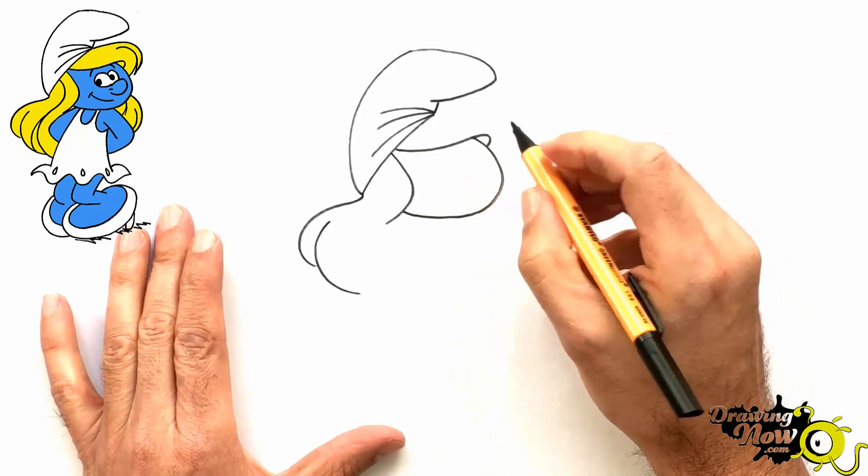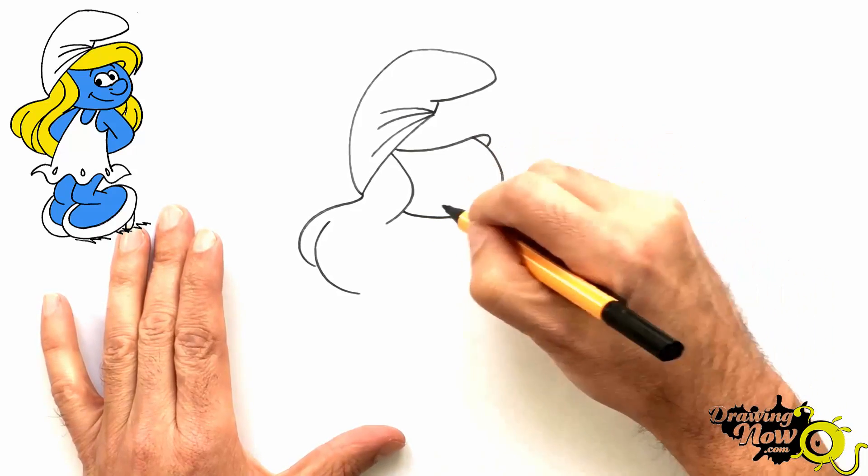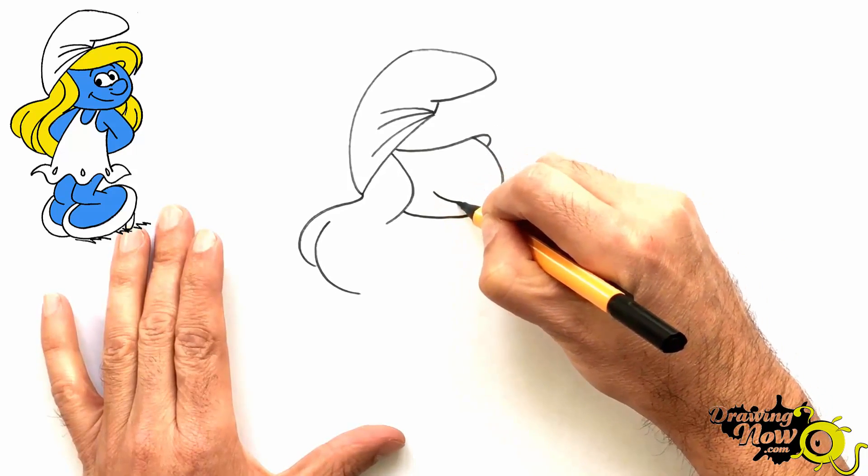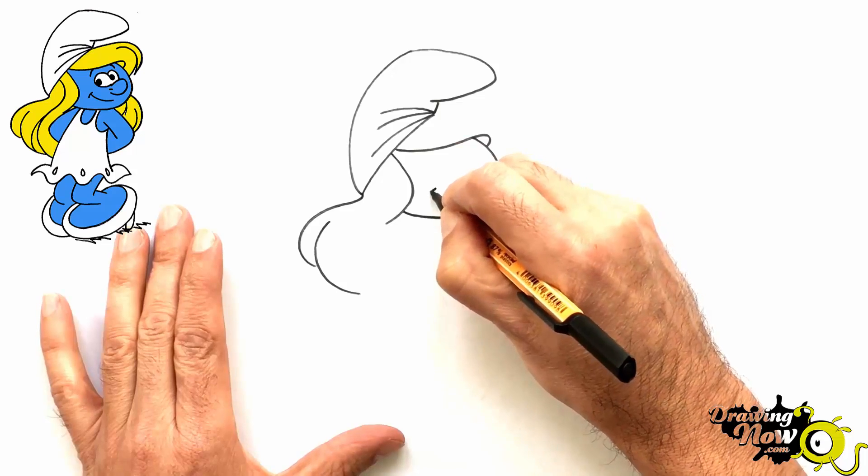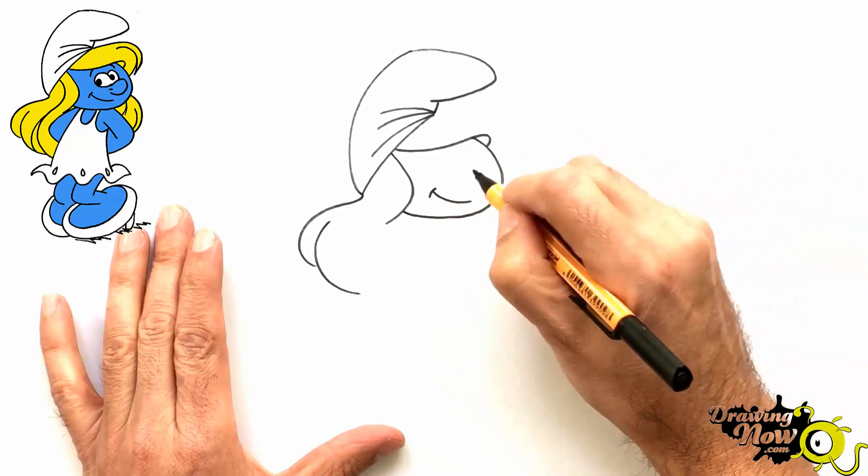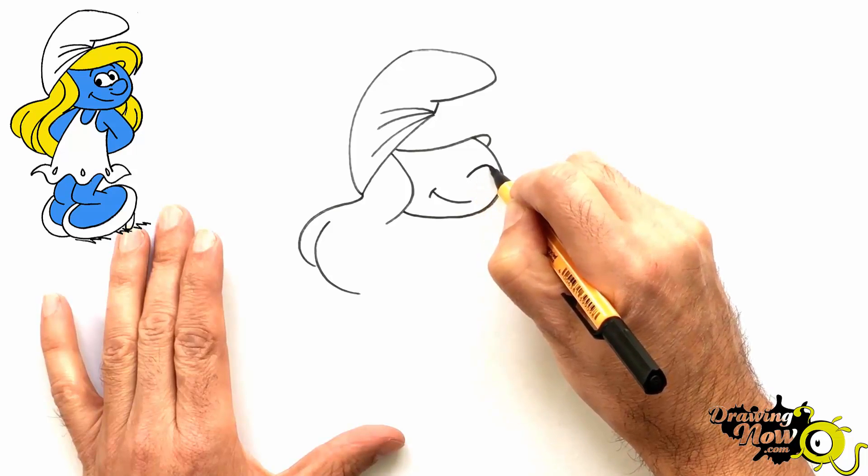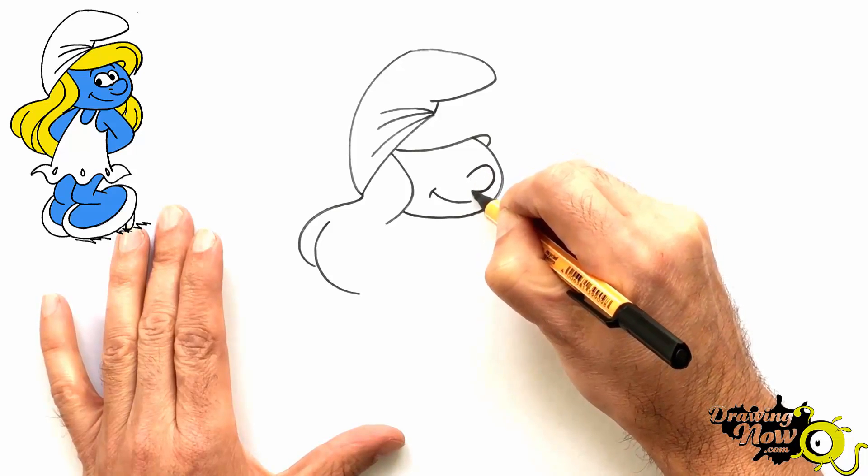And now we build a face inside. So right here, we do it like that. We warm up. A line. That's the mouth. Smiling. The nose, roughly here. Up. Down.